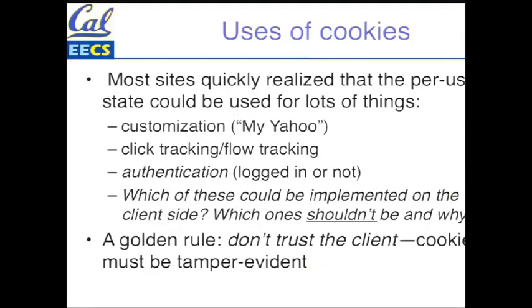As soon as cookies were invented, people started using them for all kinds of things: customization of homepages, flow tracking and click tracking, and tracking whether you're logged in. You do a login procedure once; a cookie is issued indicating you're authenticated. As long as you keep supplying that cookie, you don't have to log in for every new page view. In software as a service, you can never trust the client — the client could be a bot, an outdated browser, or a rogue script. So the cookie has to be constructed so you can verify it's legitimate and hasn't been tampered with. When we talk about the Rails framework, we'll see how Rails does that for you.